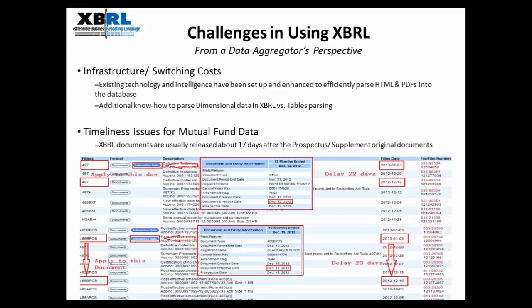Having looked at the benefits of using XBRL for end users, we will next look at some challenges in utilizing XBRL. Firstly, as a data aggregator, we need to incur significant infrastructure and switching costs. We have invested a lot in existing technology and intelligence to process HTML and PDF documents into the database efficiently. Having to switch from HTML and PDF processing to XBRL processing will mean additional costs. For example, the current processes have been set up to parse tables efficiently, but with XBRL, we will need to gain additional technical know-hows to read and parse dimensional data.